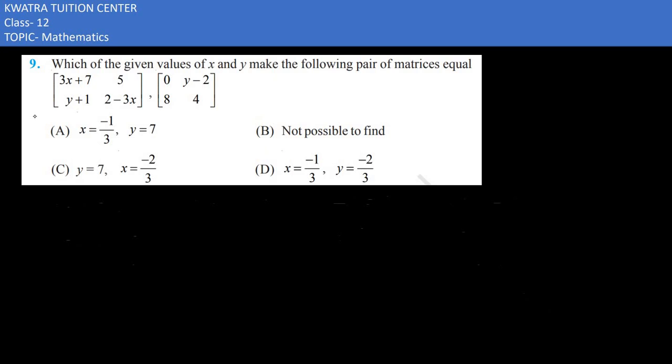Here in the 9th one, it says which of the given values of x and y make the following pair of matrices equal. In both equal, which values will be equal? The first element will be equal. First of all, 3x plus 7 is equal to 0, so x will be equal to minus 7 by 3.